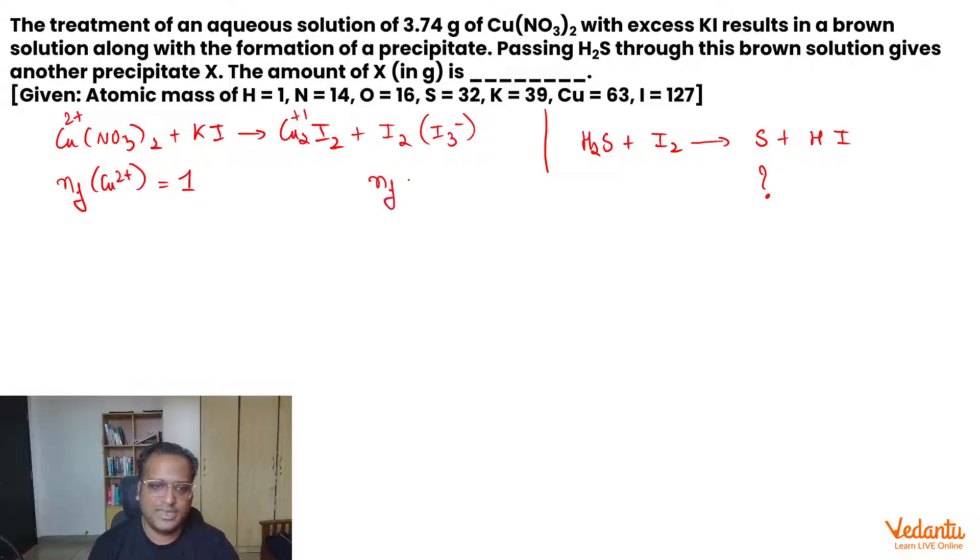What is the n-factor for I₂ in the first reaction? Iodine is coming from -1 to 0 oxidation state. There are 2 iodine atoms, so n-factor of iodine is 2.